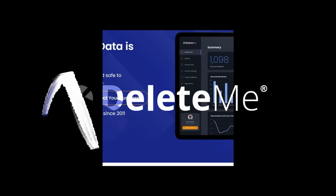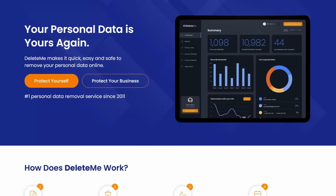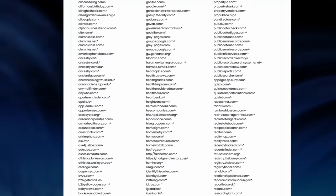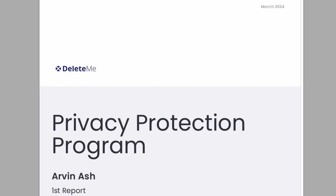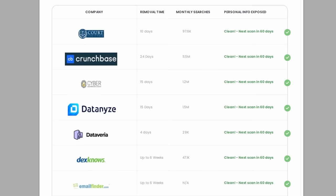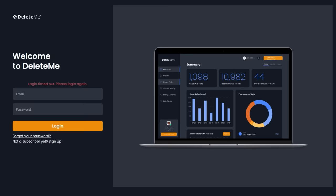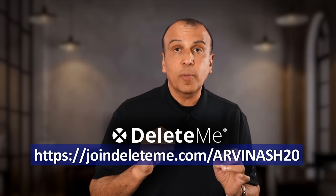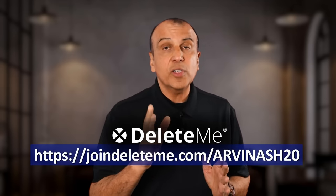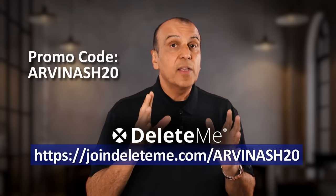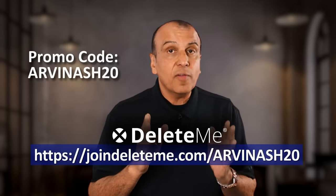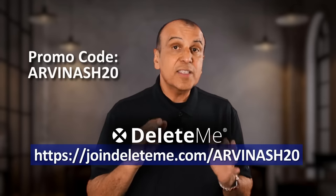This is where Delete Me, our sponsor, can help protect your privacy and reduce your risk of stalking, harassment, phishing, and identity theft. They'll remove your data from hundreds of data broker sites. I used their service recently to do just that because with my online presence, you can only imagine the risks I'm exposed to. These are just some of the sites they removed my information from. Just like me, you have the right to stay private and protect yourself. And with Delete Me, you get the power to make it happen. You simply sign up online and they do all the work. And right now, Arvin Ash viewers can get 20% off a Delete Me US consumer plan when you go to joindeleteme.com forward slash Arvinash20 and use promo code Arvinash20. That's joindeleteme.com forward slash Arvinash20 or code Arvinash20 or you can simply click the link in the description.